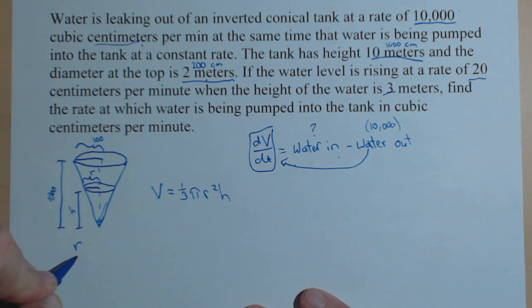So, the radius of our small cone is to the height of our small cone as 100 is to 1,000. So, we get that this equals 0.1.